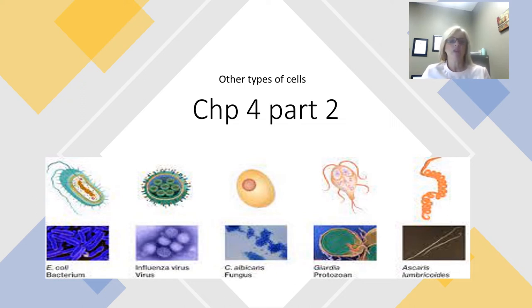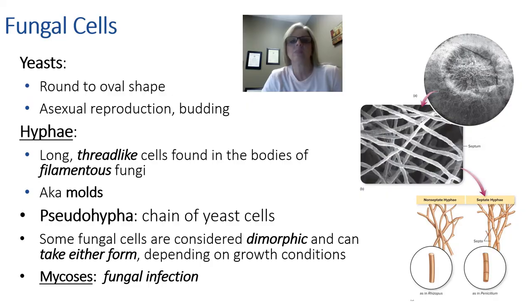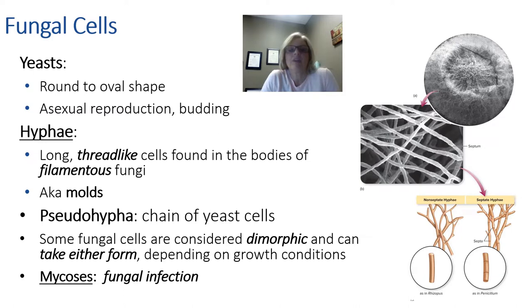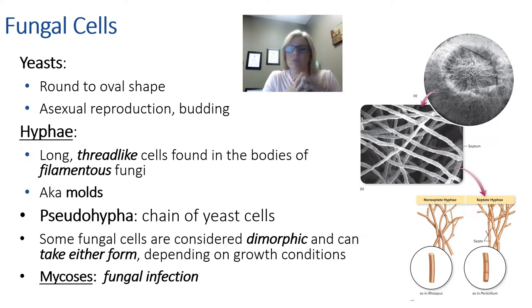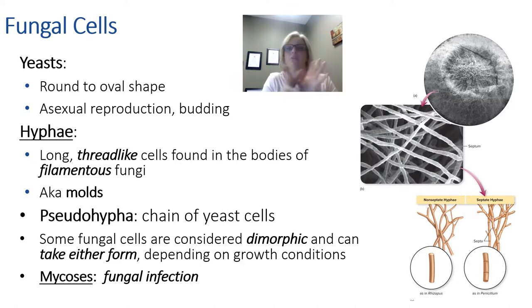Now we're going to look at some of the other types of cells and how they're put together. Fungal cells — fungi. The aspects of fungi that we're going to be concerned with are yeast and mold. We're not necessarily talking about things like mushrooms, as there are many other types of fungi. But we're going to look at yeast and molds.